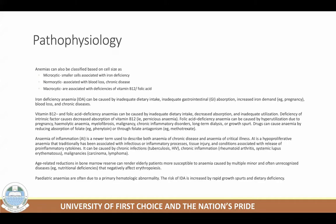Iron deficiency anemia can be caused by inadequate dietary intake, inadequate GI absorption — for example, patients who are taking their iron supplements with other medicines that can chelate the iron, such as antacids. When there's also increased iron demand, like in pregnancy, this is common. When there's blood loss from trauma, accident, or surgery, you can have anemia result. Chronic diseases like diabetes, hypertension, and renal disease are also very important causes.